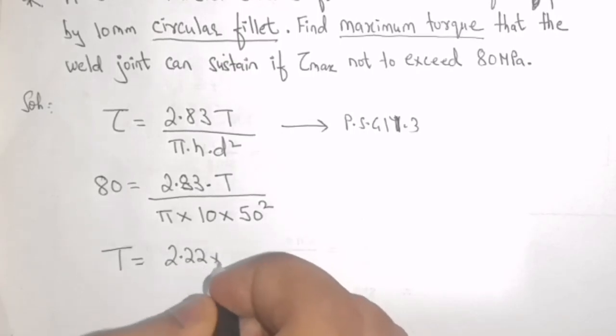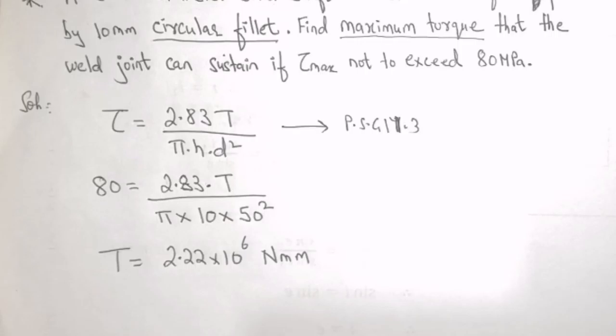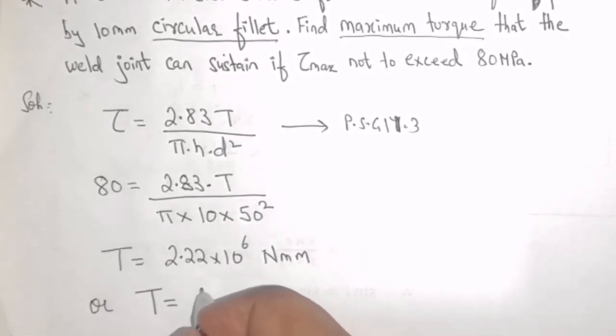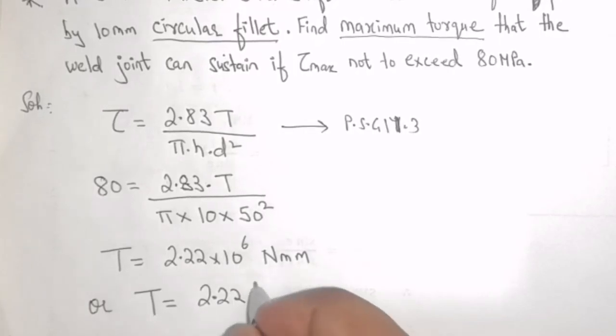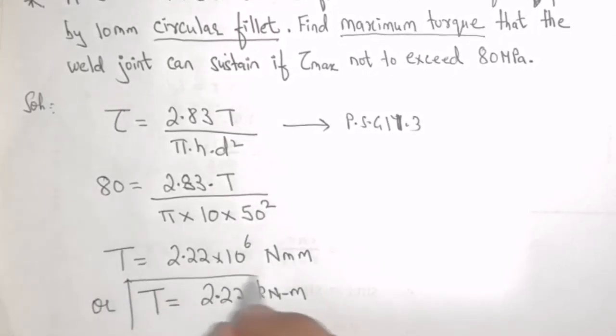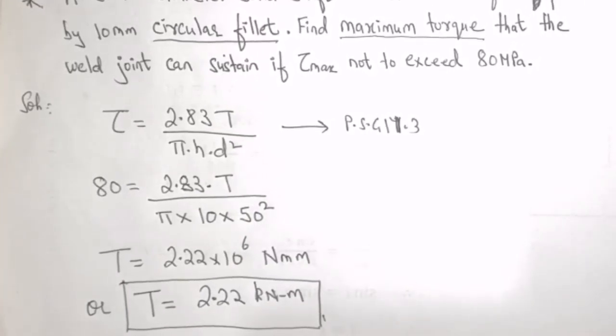Or if I want to convert it, I can write T is equal to 2.22 kilo newton meter. This completes the solution.